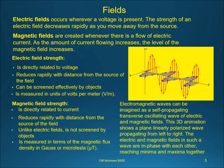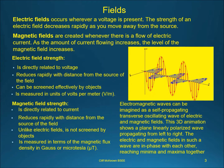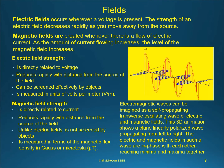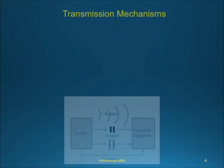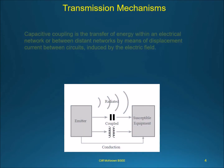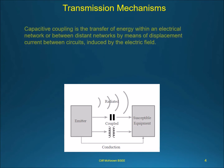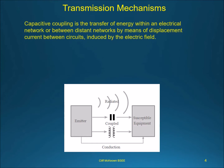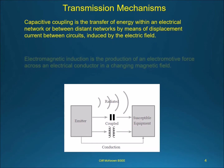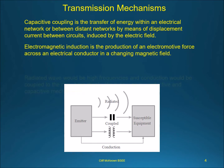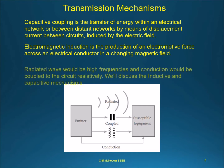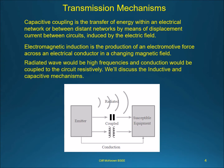Electromagnetic waves can be imagined as a self-propagating transverse oscillating wave of electric and magnetic fields. This 3D animation shows a plane linearly polarized wave propagating from left to right. The electric and magnetic fields in such a wave are in phase with each other, reaching minima and maxima together. Capacitive coupling is the transfer of energy within an electrical network or between distant networks by means of displacement current between circuits, induced by the electric field. Electromagnetic induction is the production of an electromotive force across an electrical conductor in a changing magnetic field. Radiated waves would be high frequencies and conduction would be coupled to the circuit resistively.